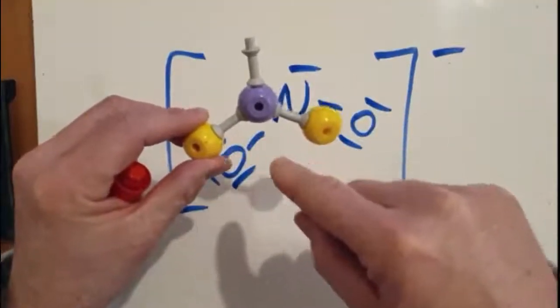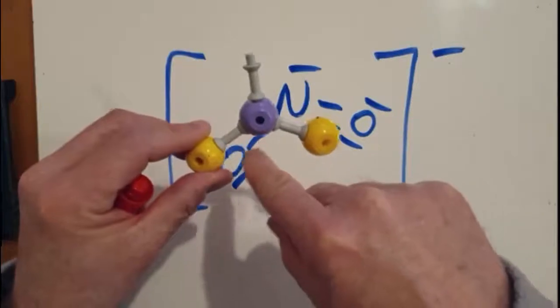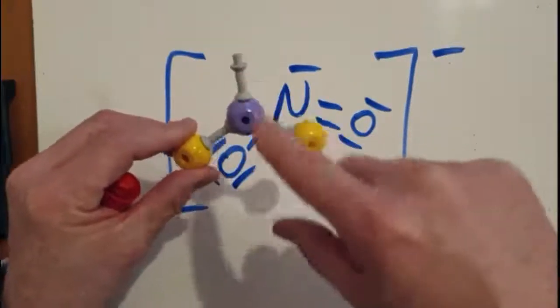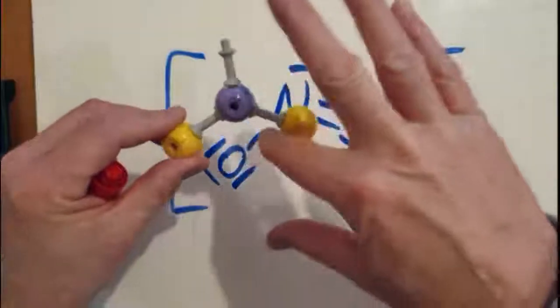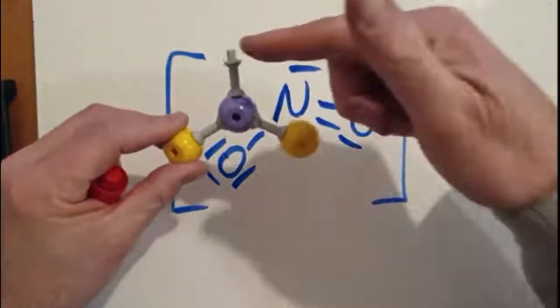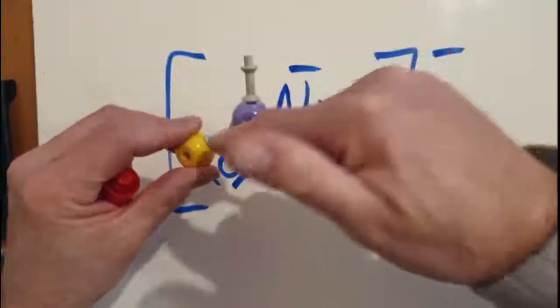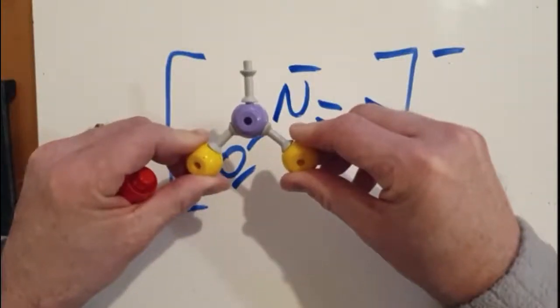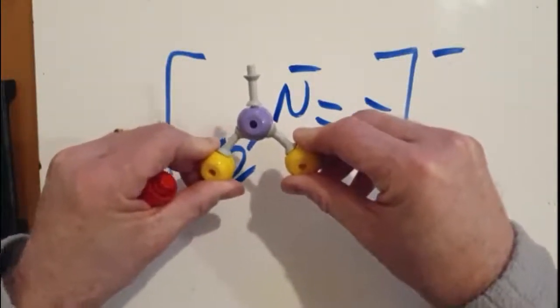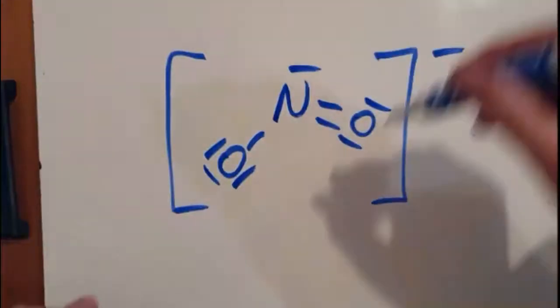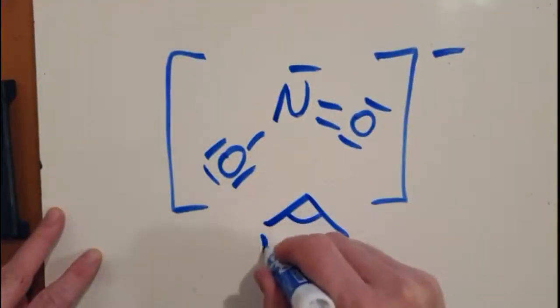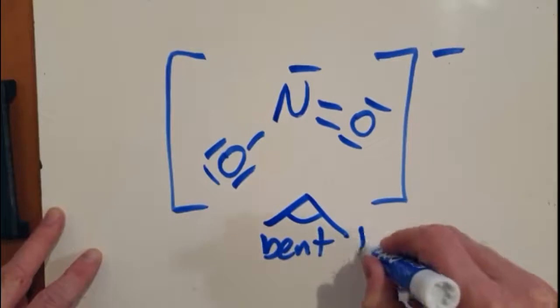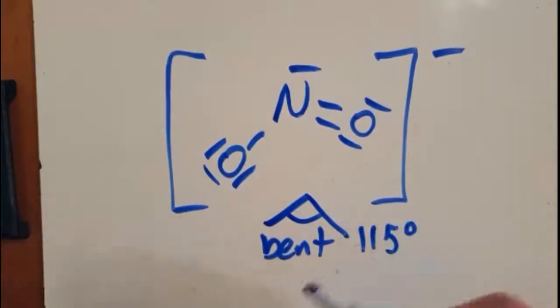So it's going to look like that. This is a bent molecule, and the angle is less than 120. You can see that just from looking at it. That it could be 120, but why is it less than 120? Well, this lone pair of electrons repels these bonded pairs more. So it's bent. And it's 115 degrees.